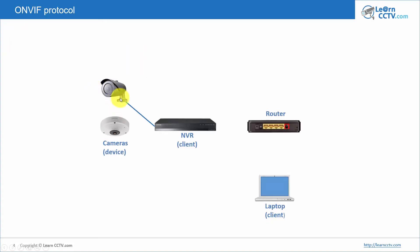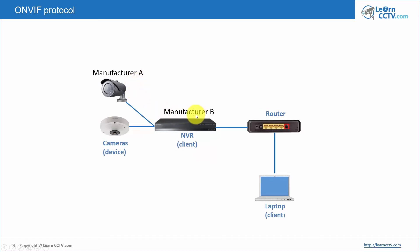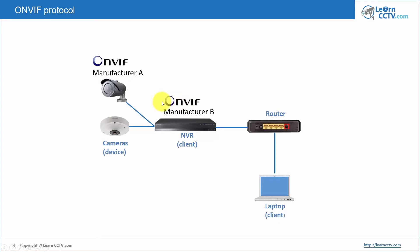Here's an example: you have a camera connected to an NVR that can connect cameras directly, with some ports — let's say four ports. You connect a second camera, then connect to your router and to your laptop. One device is manufacturer A, the other is manufacturer B — say Samsung and Bosch. They speak different protocols, so there's no communication between them. But if both use ONVIF with the correct profile — say Profile S — now they can communicate.